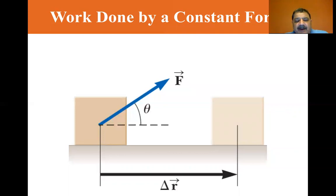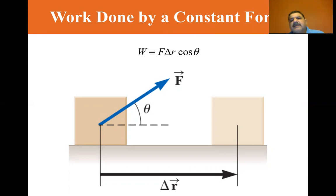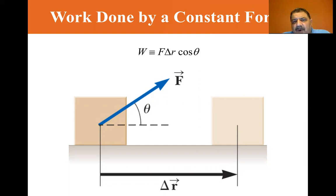In the figure, we see an object undergoes a displacement along a straight line while acted on by a constant force F that makes an angle theta with the direction of the displacement. The displacement is the black arrow R, and the force is the blue arrow, with angle theta between them. The work is defined as F times delta R times cosine of theta. The cosine of theta gives us the component of force that is in the direction of the displacement.